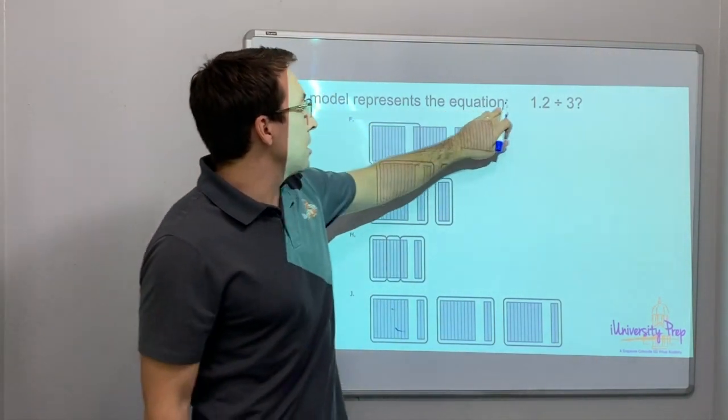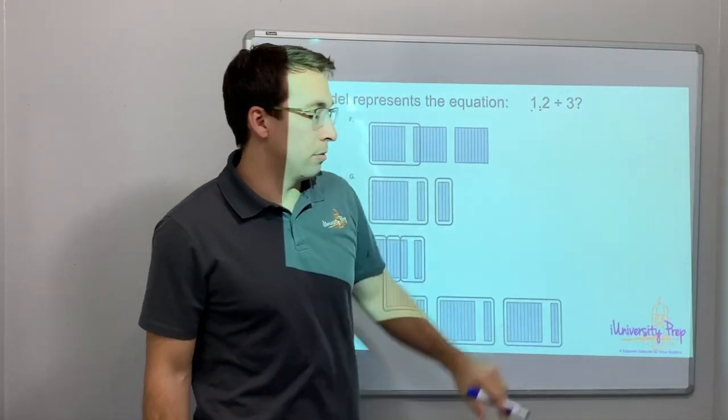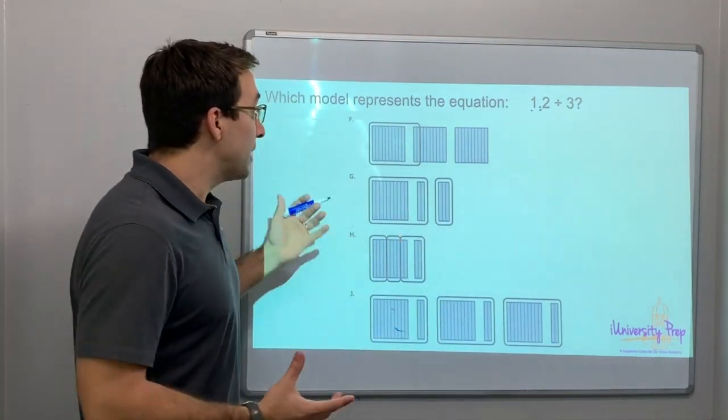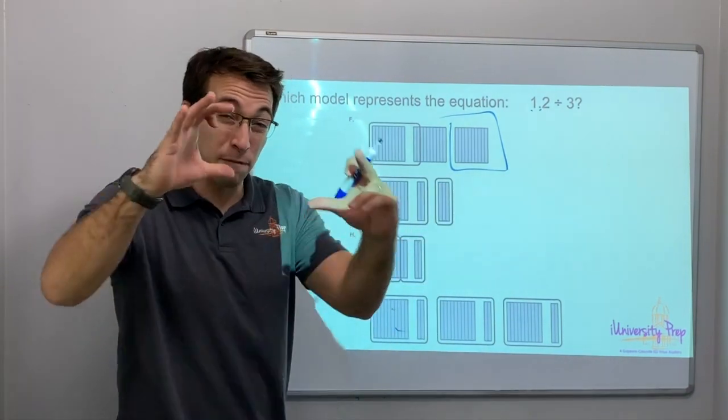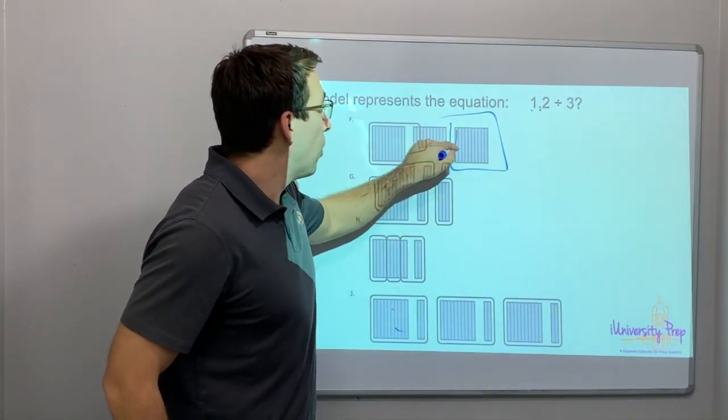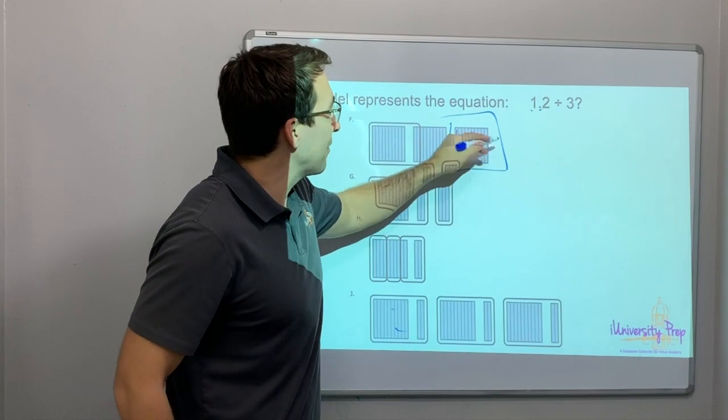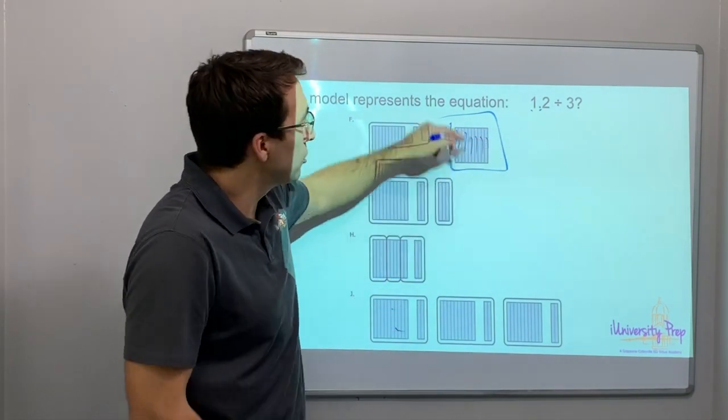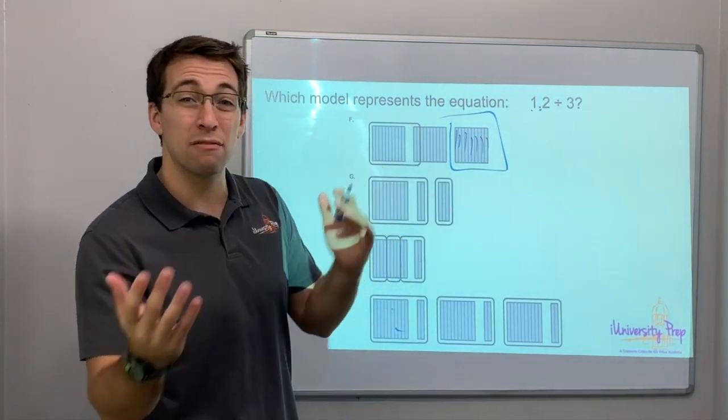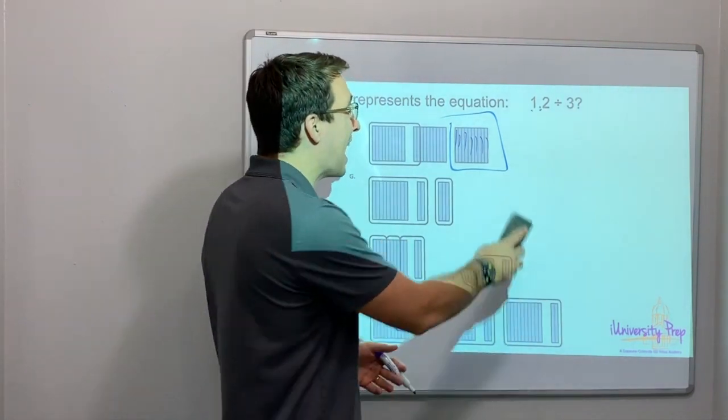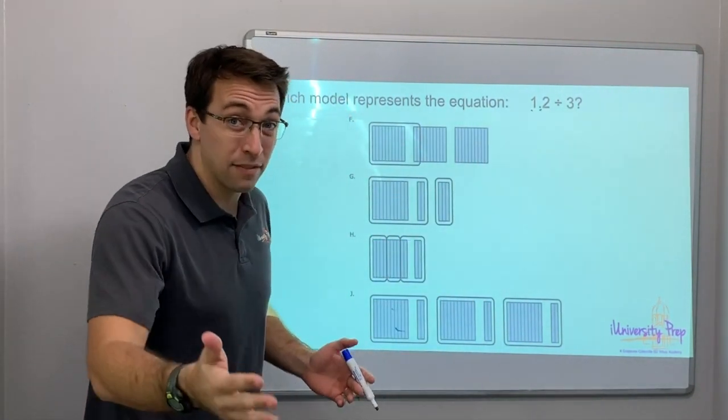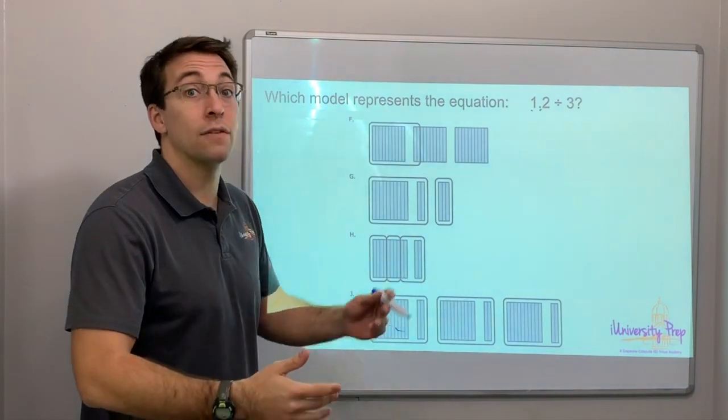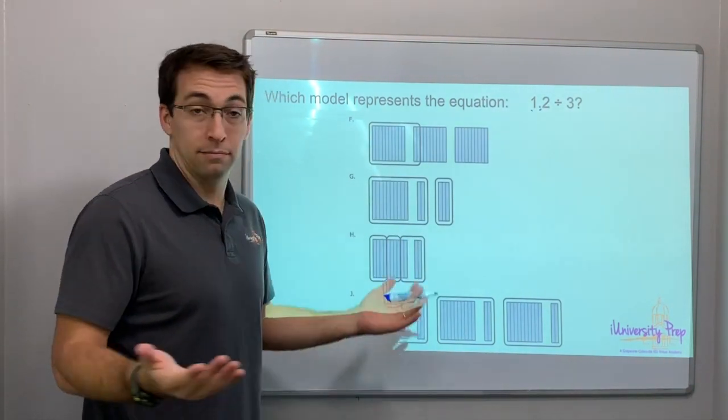Which model represents the equation 1.2? Remember, this is 1, right? That's a whole 1. Why? Because it's the full square. 1, 2, 3, 4, 5, 6, 7, 9, 10. There's 10 lines. If you have 10 out of 10, if you have 10 dimes, how much money do you have? A dime is one tenth of a dollar. If you have 10 of them, you have a full dollar.